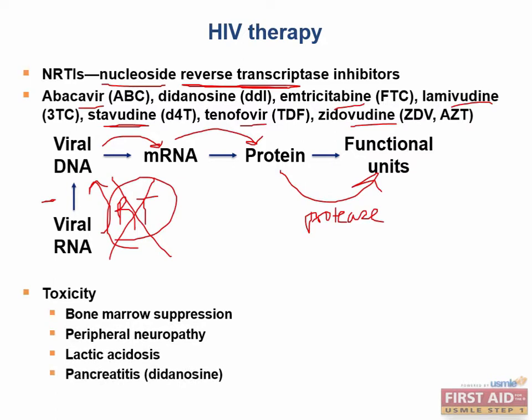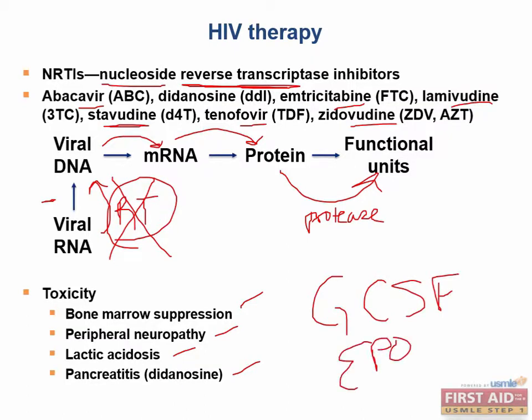The toxicities of these medications include bone marrow suppression, peripheral neuropathy, lactic acidosis, and pancreatitis with didanosine. Bone marrow suppression makes sense because these are nucleoside analogs that can competitively inhibit our own DNA and RNA polymerases found in the bone marrow. We can counteract this by giving granulocyte colony-stimulating factor as well as erythropoietin. The peripheral neuropathy, lactic acidosis, and pancreatitis are additional side effects, and fairly low yield for Step 1.